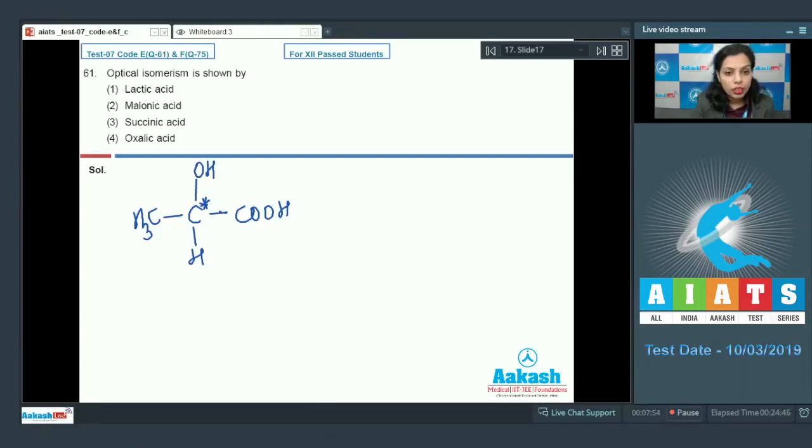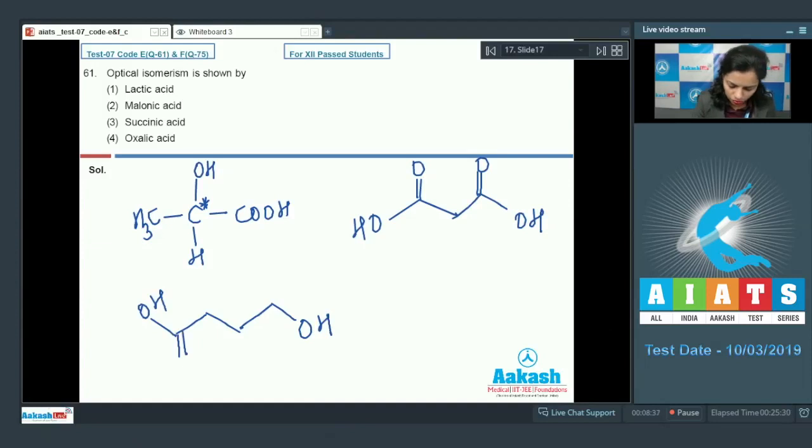It means it is showing optical isomerism. Simply if I talk about malonic acid, malonic acid is this and in this case there is no carbon atom which is chiral. Further in case of succinic acid, this is succinic acid.